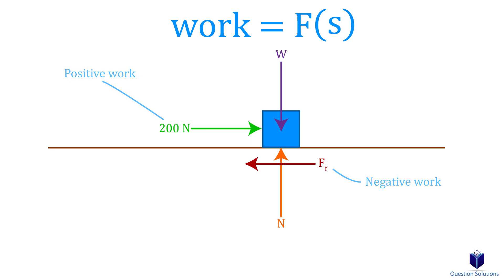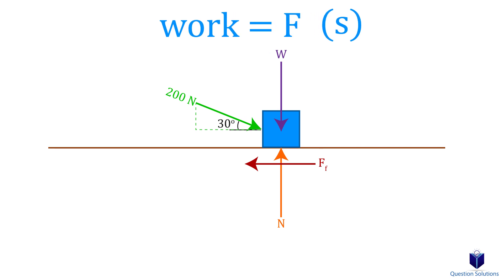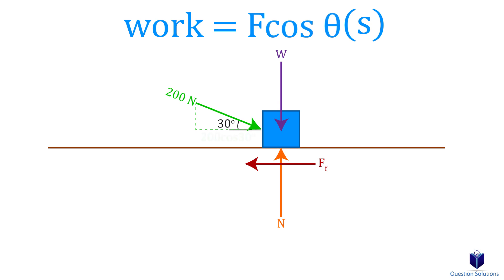Now let's say the 200 newton force is applied at an angle of 30 degrees. The work done is only done by the x component of this force because the box does not move up or down. The displacement is in the horizontal direction, so we only look at the horizontal components of forces. In this example, only the 200 cosine 30 degrees does positive work.